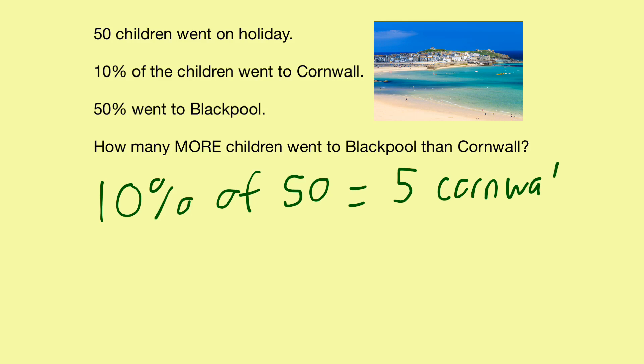And we even use my favourite percentage, 10%. So nice and easy. Divide 50 by 10 gives us 5 for Cornwall. Just drop that there. It should be a capital C for Cornwall, really.